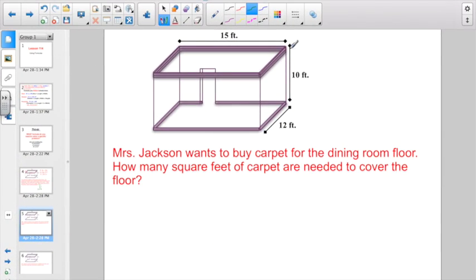Same living room diagram, same dimensions, only now they're saying Mrs. Jackson wants to buy carpet for the dining room floor. How many square feet of carpet are needed to cover the floor? The key word for a clue here, they want to know square feet, right? So what do we need to do to find square feet? What formula do we want to use? The formula we need is area equals length times width.